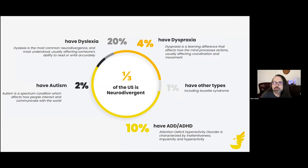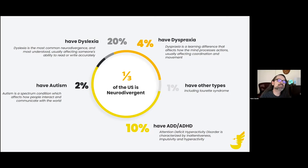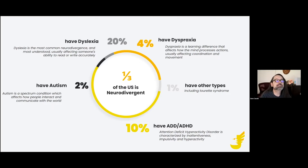Dyspraxia makes up about 4% of the population. A little over 2% of the population is autistic, including myself. And then about 1% are all the other types, including, for example, Tourette's syndrome. Added together, this means that roughly a third of the U.S. population is neurodivergent.